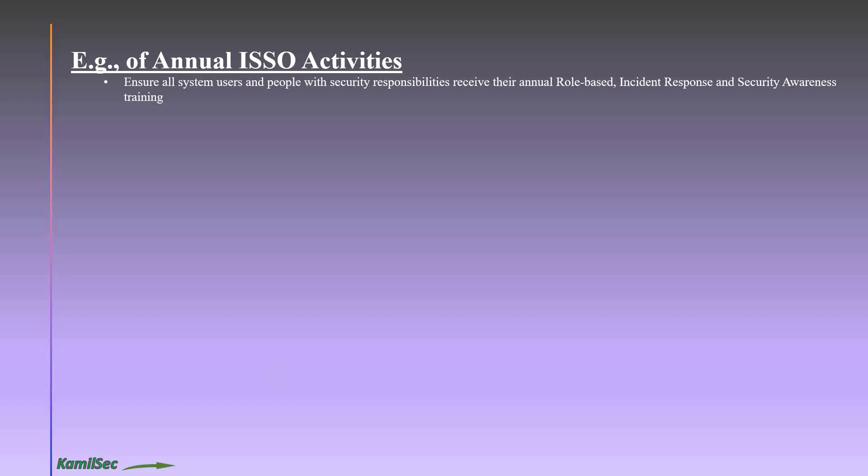For annual ISSO activities: ensure all system users and people with security responsibilities receive their annual role-based training, incident response refresher training, and security awareness training. You need a system of checks — set a date each year and start sending reminders to ensure everyone completes their required training.